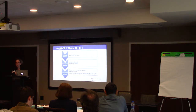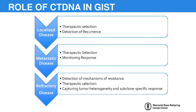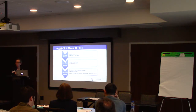In the metastatic disease setting, ctDNA can allow for therapeutic selection by showing the genomic profile of the tumor, and potentially allow us to monitor therapeutic response. In the refractory disease setting, it allows for detecting mechanisms of resistance that emerge on therapy, facilitating timely changes in therapy. It is also very helpful to capture the heterogeneity of the tumor and evaluate specific response within subclones.